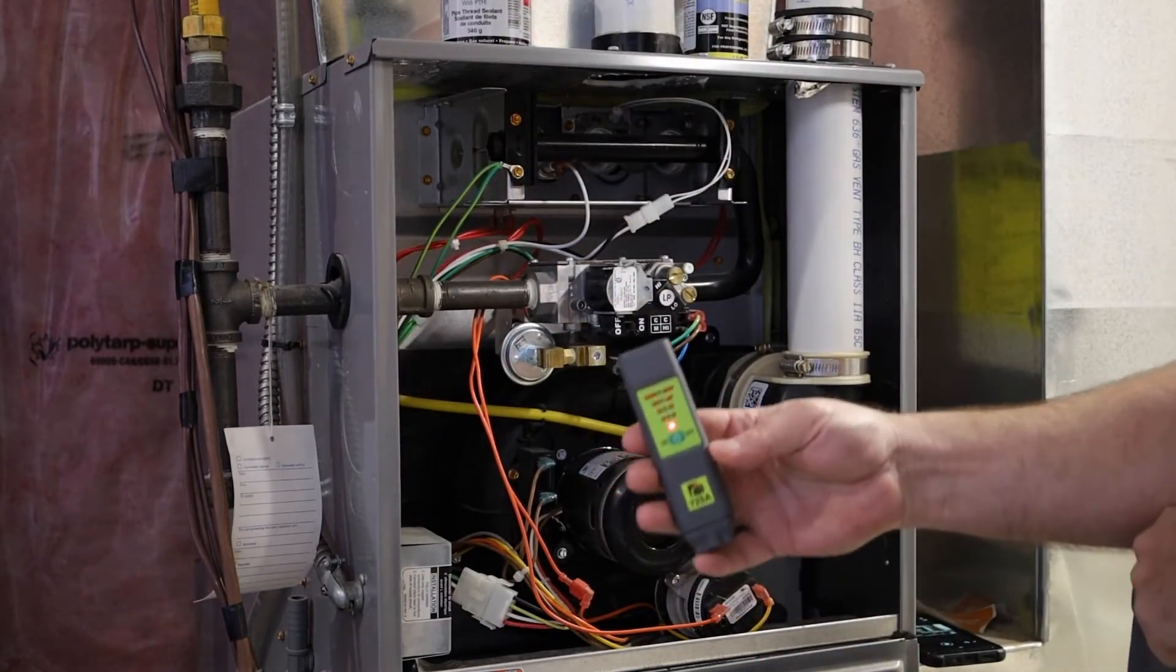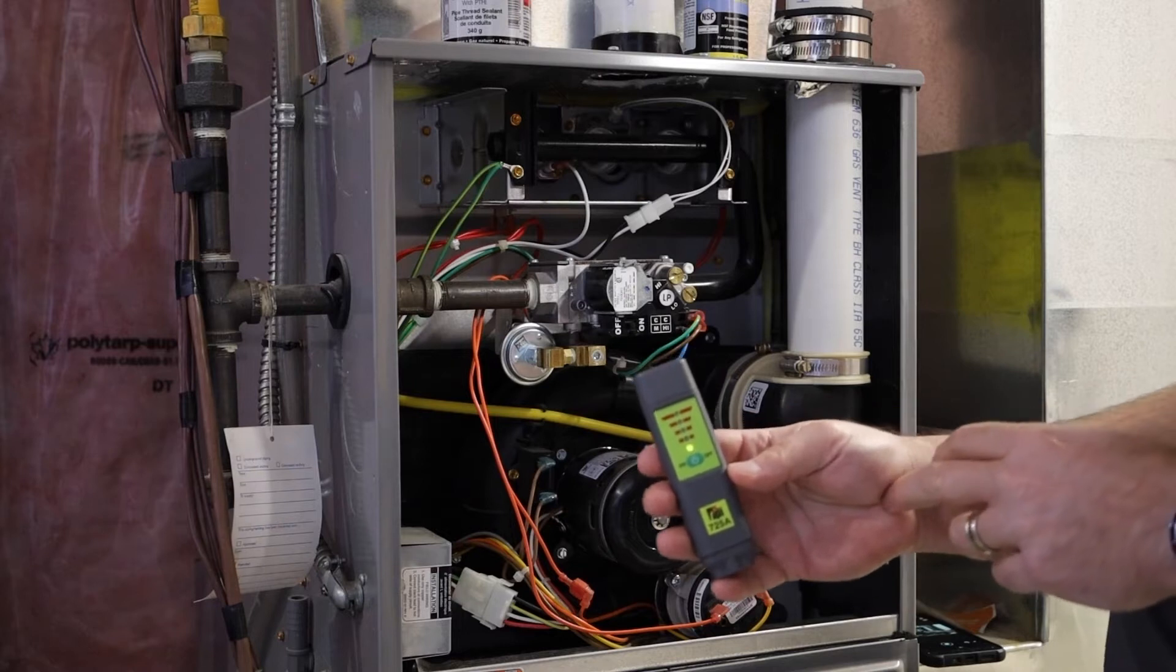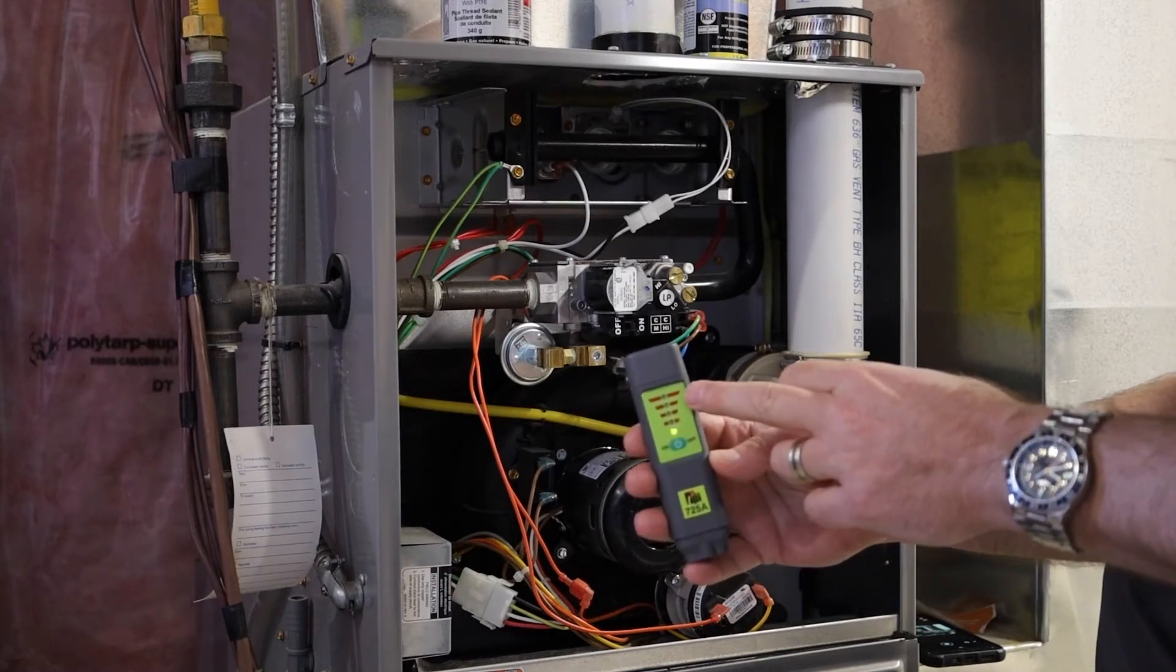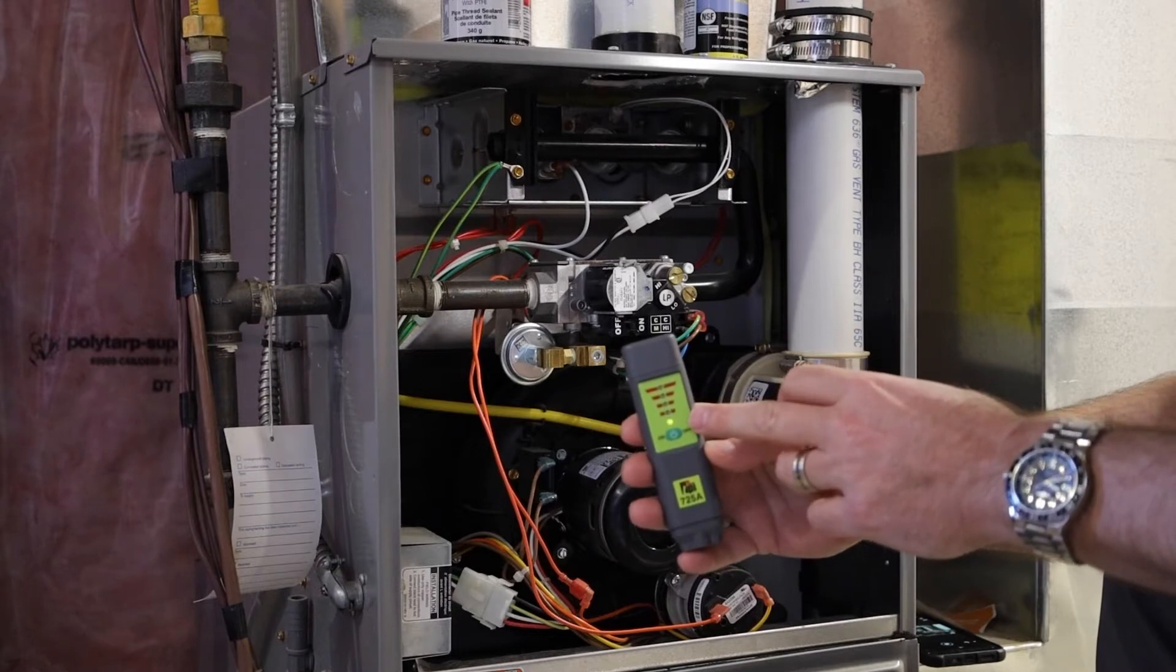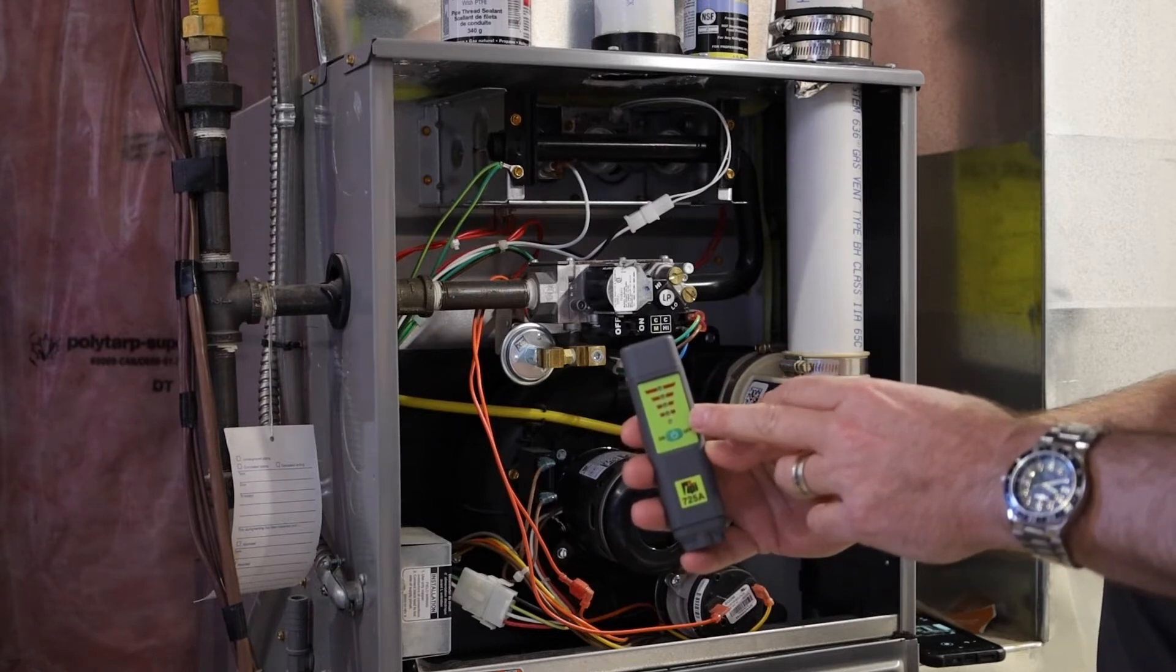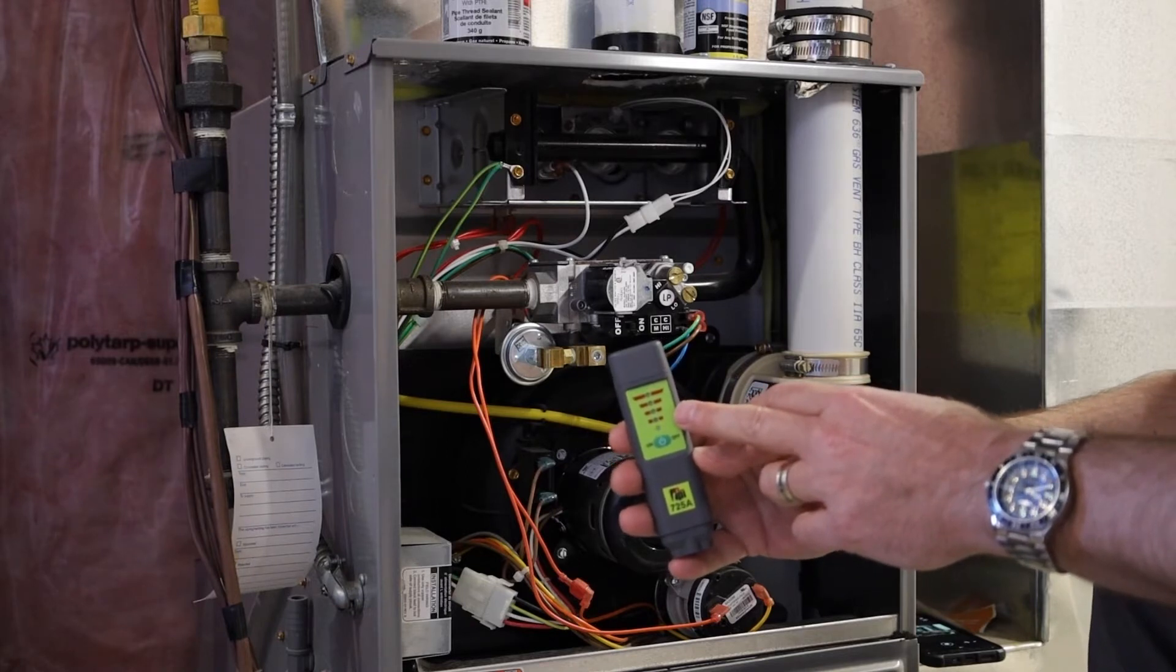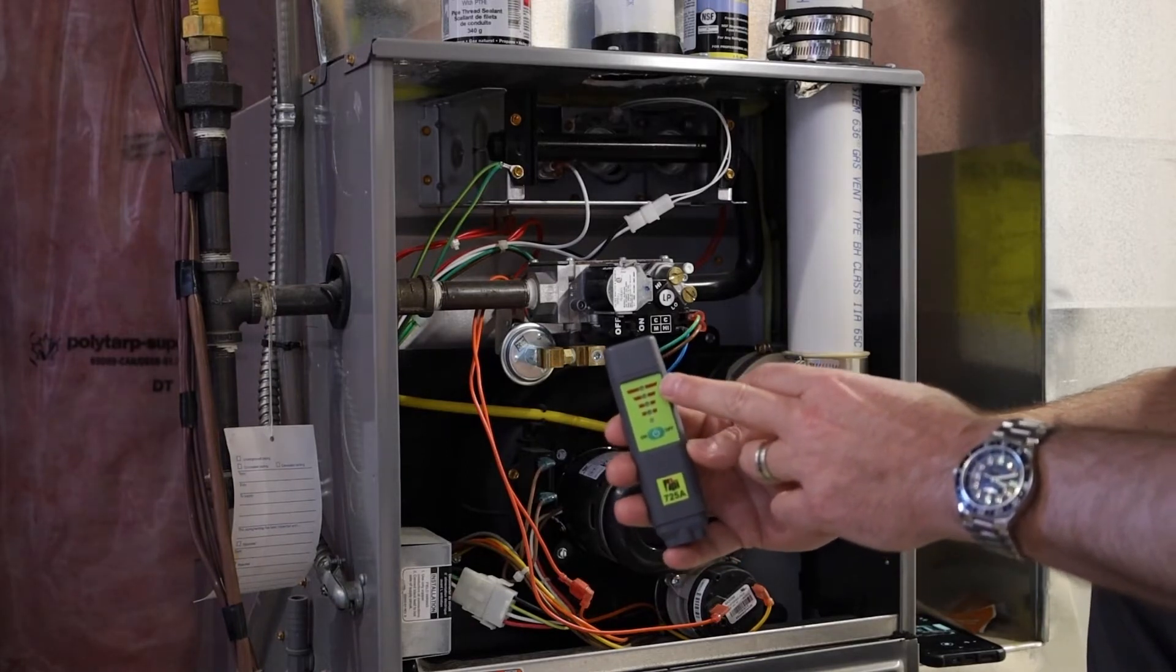There are indicating LED lights on here that indicate the size of the leak in parts per million. The first level would be under 500 ppm, then level two would be 1,000, 3,000, and then 5,000 ppm.